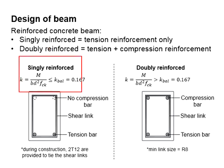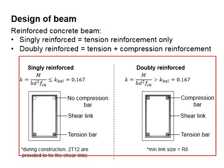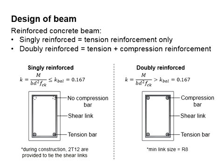This diagram compares the two types of reinforced concrete beam. The singly reinforced beam ignores the contributions of the top reinforcement bar as a compression member. The K value for the singly reinforced beam is less than 0.167. However, during the construction, a minimum bar size of two T12 are to be provided in order to tie the shear link.